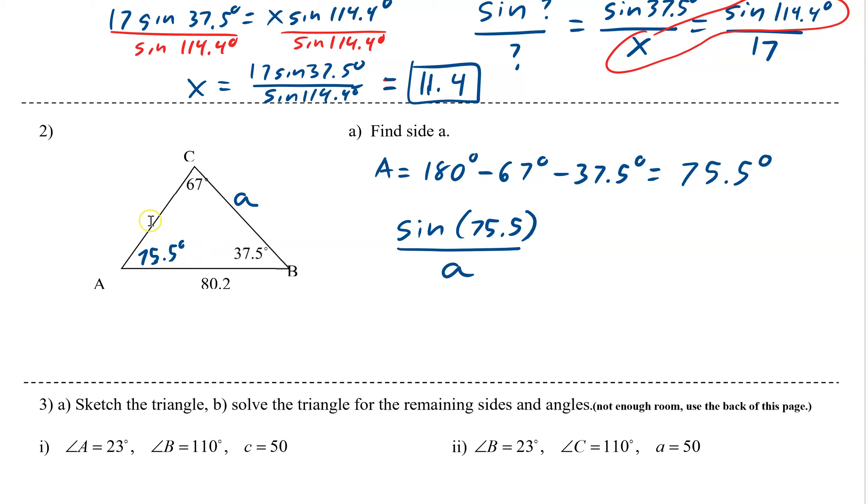B, we have its angle, but we don't have its side. So we're not using that one. C, we have its angle and its side. So sine of 67 degrees all over 80.2. We'll cross-multiply again. As you do a bunch of these, you'll start to get quicker at it. Then we divide. A equals 80.2 sine 75.5 degrees all over sine of 67 degrees.